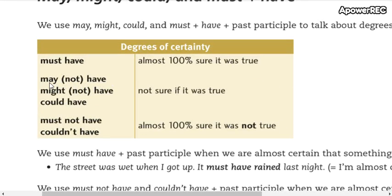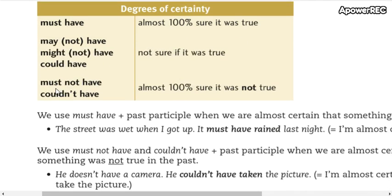But don't forget when you use may, might and could as have in affirmative you are not sure. In affirmative form with must you are almost a hundred percent sure it was true. Recuerden, casi 100% seguros de que es cierto. When you use must not in negative or couldn't have you are almost a hundred percent sure it was not true.